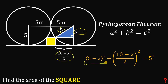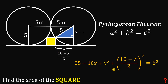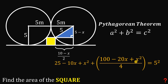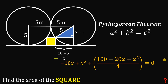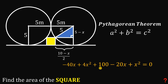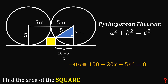Expanding: (5 − x)² = 25 − 10x + x², and [(10 − x)/2]² = (100 − 20x + x²)/4, and 5² = 25. The 25 terms cancel on both sides. Multiplying everything by 4 to eliminate the denominator gives: −40x + 4x² + 100 − 20x + x² = 0. Combining like terms: 5x² − 60x + 100 = 0.